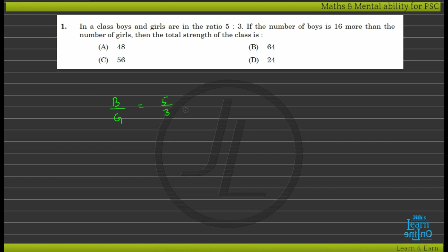Boys and girls are in the ratio of 5 is to 3. This is the number of boys and girls. If you multiply by 5 and 3, you will get 10 divided by 6.